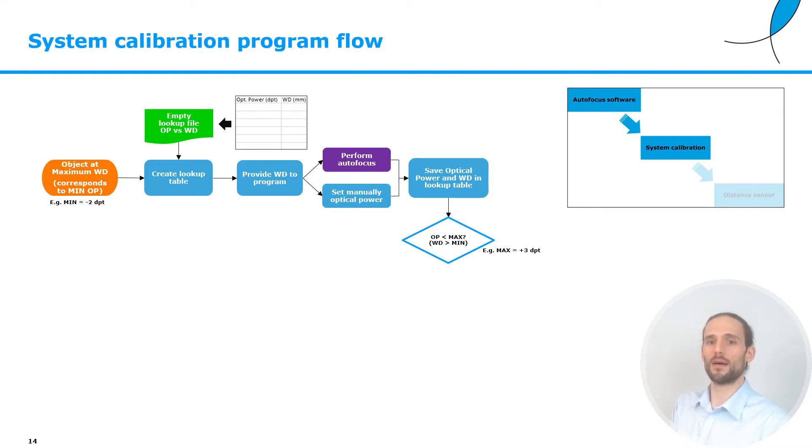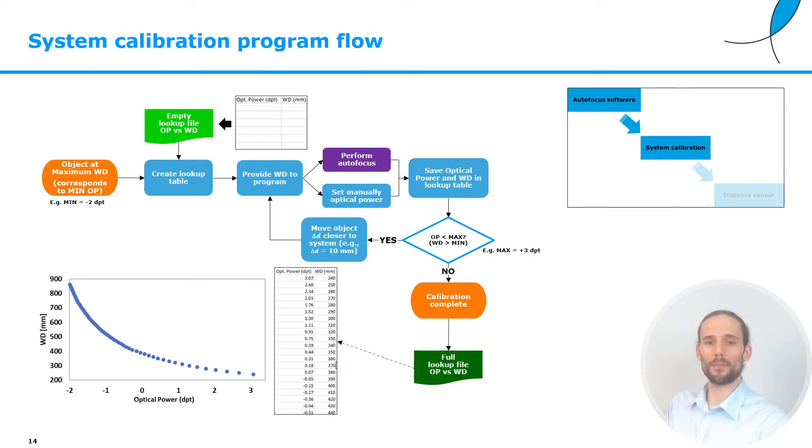If the optical power is still smaller than the maximum optical power, what we will do is basically move the object closer and closer to the system, and we will run again this loop, the calibration loop, until we get to the point where the optical power is bigger than the maximum optical power, or the working distance is smaller than the minimum working distance. At this point, we're done with the calibration, and we will have our lookup table file, which is filled up. For example, for the system I showed you before, this is how the optical power versus working distance looks like. Of course, the more data points one acquires, the more accurate the calibration will be.